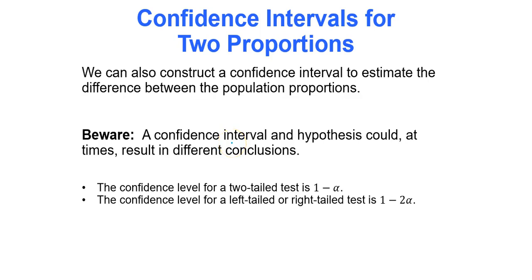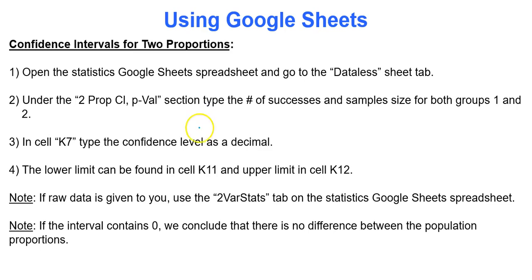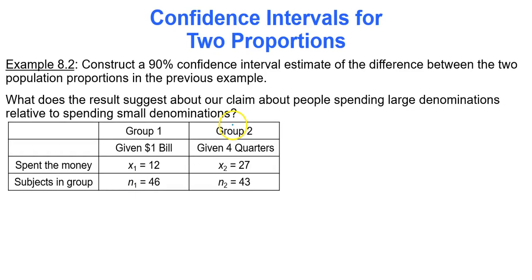You can also do confidence intervals for two proportions using the same Google Sheets process, but you now enter a confidence level. For a two-tailed test the confidence level is one minus alpha. For a left-tailed or right-tailed test the confidence level is one minus two times alpha, because you're focused on the middle percentage of values. For example, constructing a 90% confidence interval for the previous example, you simply type 0.90 into Google Sheets.